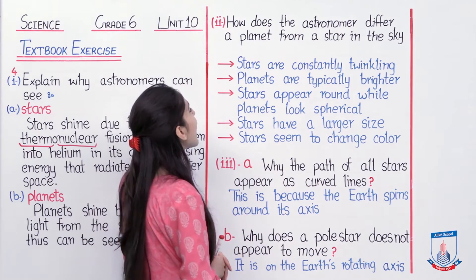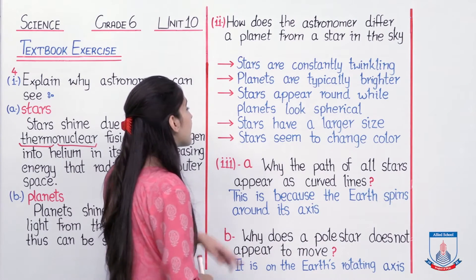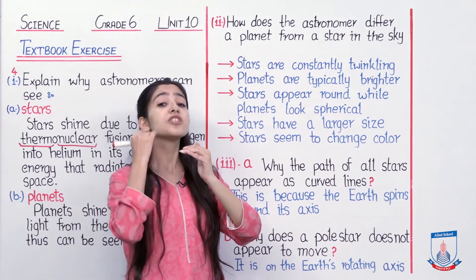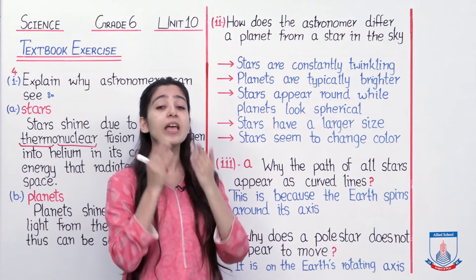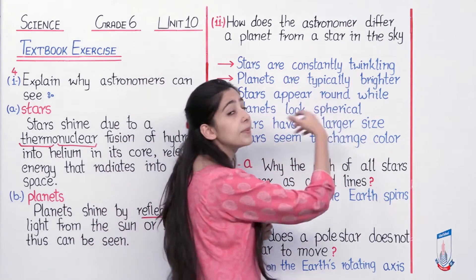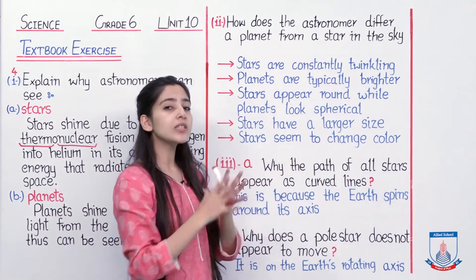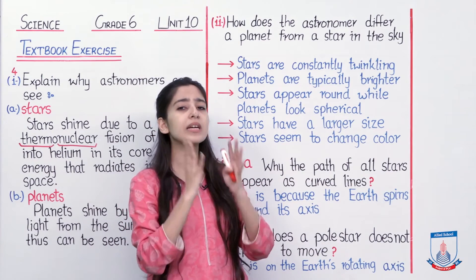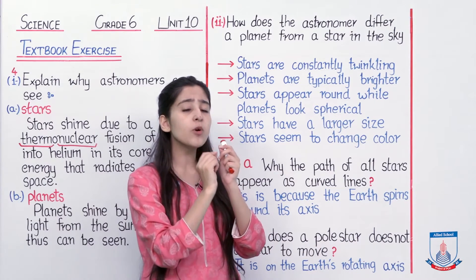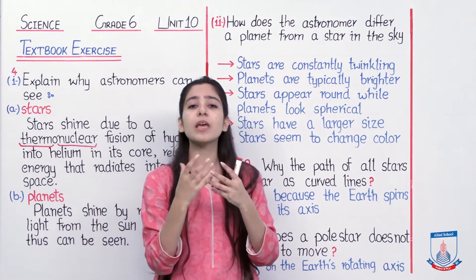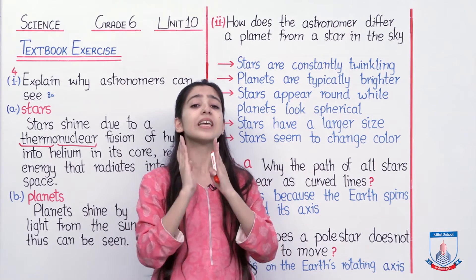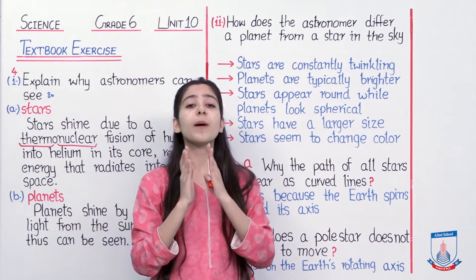Second technique dekhte hain: planets are typically brighter. Humne dekha ke stars twinkle kar raha hai, matlab unki intensity, chamak kabhi kam ho rahi hai, kabhi zyada ho rahi hai — that is twinkling. Magar jo planets hain, woh originally zyada brighter hote hain. Agar aap ghor se dekhen ek star ko aur ek planet ko ikatthe, aur aap phir telescope se dekhte jayein, aapko ek nazar aayega halka sa kam, woh halka sa zyada intensity mein, brightness mein — woh hoga hamaara star. Ek aisi cheez hogi jo constantly star se zyada bright hai — woh hoga hamaara planet.